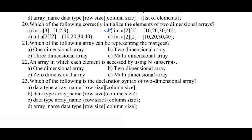Question number twenty-one: which of the following array can be used for representing matrices? Options: a) one-dimensional array, b) two-dimensional array, c) three-dimensional array, d) multi-dimensional array. In order to represent matrices, a minimum of two dimensions must be there, hence option b, two-dimensional array, is the right answer. Question number twenty-two: an array in which each element is accessed by using N subscripts. Options: a) one-dimensional, b) two-dimensional, c) zero-dimensional, d) multi-dimensional array. Since N subscripts are there, it is a multi-dimensional array.